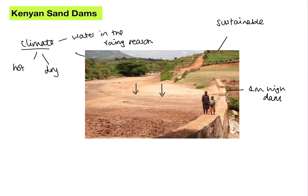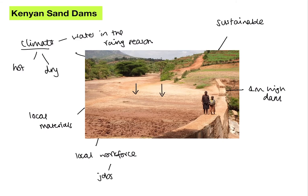The solution that local people have provided here is incredibly sustainable. First, we've got local materials — we're not importing vast amounts of things like cement, so the dam can be replaced very quickly. We've also got a local workforce, so these dams are maintained by local people, creating jobs — good for people. And in terms of future-proofing, the dam can be raised each year, making it easily adaptable so that people still have a sustainable supply of water in years to come.